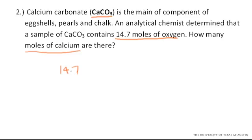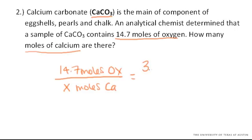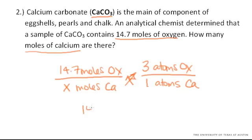If we have 14.7 moles of oxygen, and we need to solve for X moles of calcium, that has to be the same as the relationship here in the chemical formula, which says that there are 3 atoms of oxygen for every 1 atom of calcium. And when you cross multiply, you find that 14.7 must equal 3x. When you solve for X, X has to equal 4.9 moles of calcium.